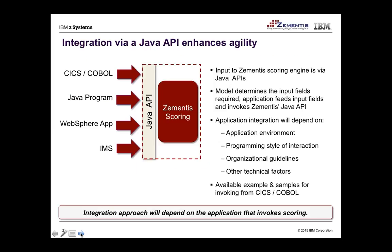The integration uses one common API and one common deployment process across the ecosystem — a standardized Java API or Web Services API that allows integrating the same model in COBOL, CICS, Java, WebSphere, and IMS. The specific details depend on your application's needs, but it provides one simple, clear requirement for how you invoke and deploy models, lowering cost and complexity and enabling quick deployment into existing environments.